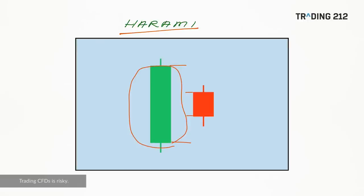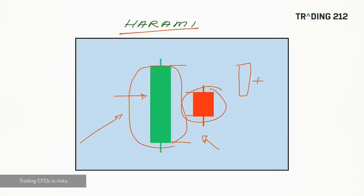One variation considered much more significant is the harami cross, where we have a big body followed by a doji. With a bearish harami — say, an uptrend leading into it — we've got the big green candle showing bullish strength, but next we get the uncertainty of a small body, so the bullish drive has ebbed away and a reversal might be on the cards. A bullish harami would be a downtrend with a big red candle followed by a subsequent small body, providing a possible signal of a reversal higher.